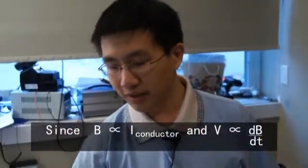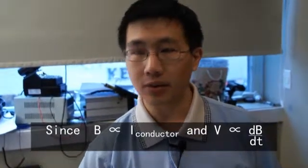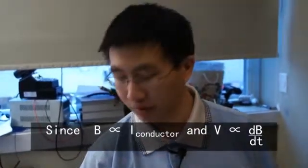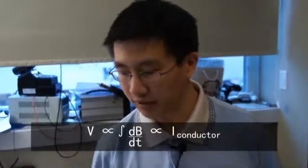So the Rogowski coil produces a voltage proportional to dB/dt, and in order to turn that into a signal that's proportional to the current flowing through the conductor, you need an integrator. Now, inside this enclosure is the integrator.